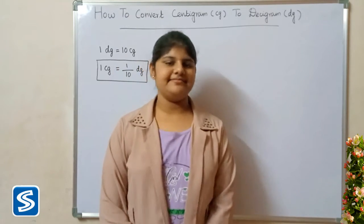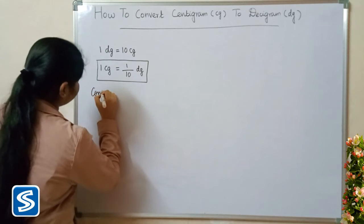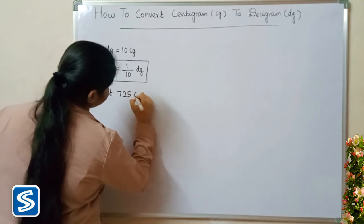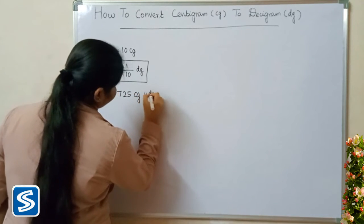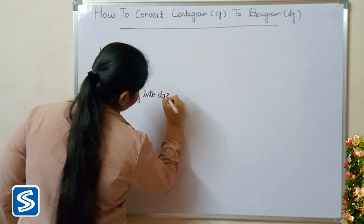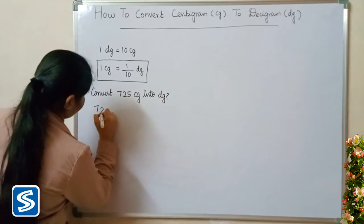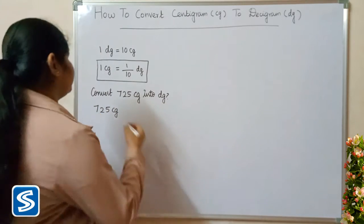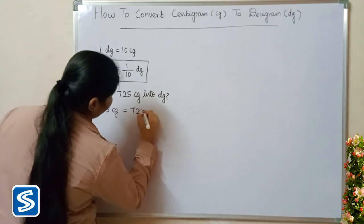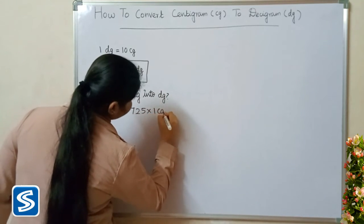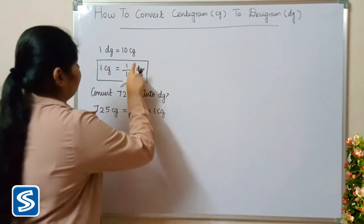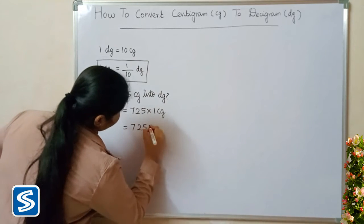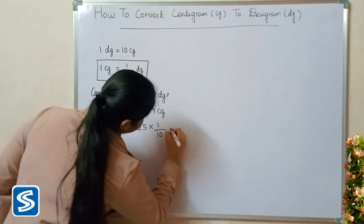Convert 725 centigrams into decigrams. 725 centigrams can be written as 725 multiplied by 1 centigram. Now we have to substitute 1 by 10 decigrams in the place of 1 centigram. So 725 multiplied by 1 by 10 decigrams.